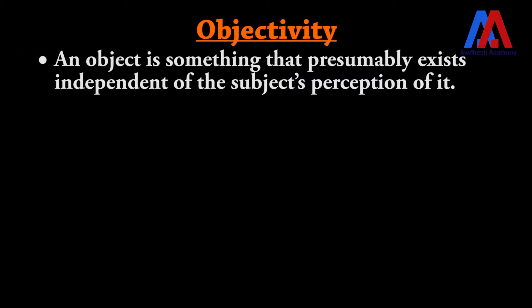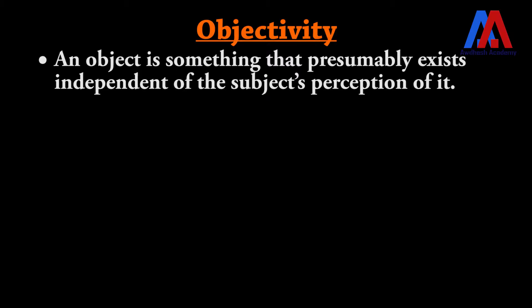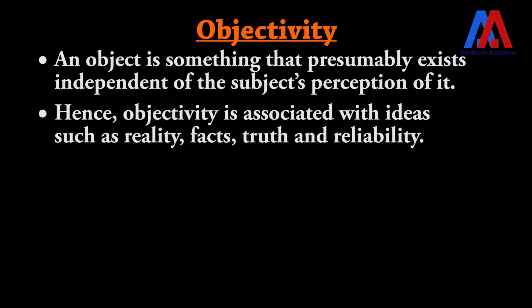Let us now understand what is objectivity. There are two terms widely used in philosophy — object and subject. An object is something which exists of its own, while a subject is a person who perceives that object. Buildings, persons, air, all natural things are objects because they exist irrespective of whether you perceive them or not. So what we call reality, truth, and fact — these are the objects.